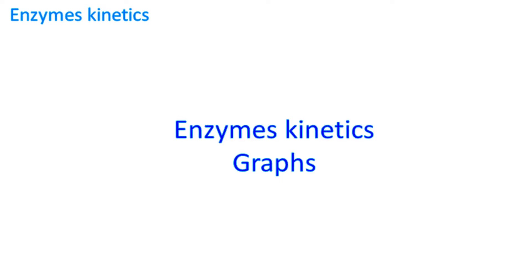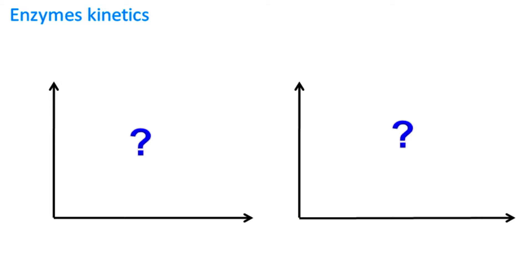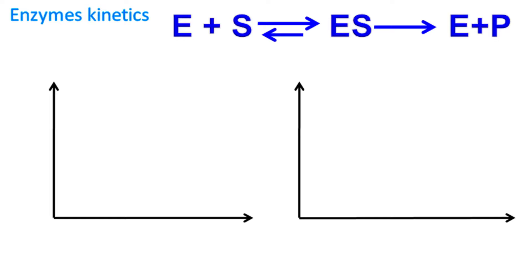The study of enzyme kinetics becomes easy when we try to understand the reaction by plotting a graph. In our case, the enzyme is acting on a substrate and the substrate is getting converted into a product and this occurs with respect to time.